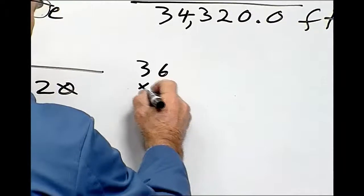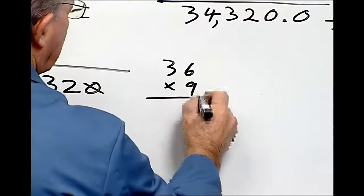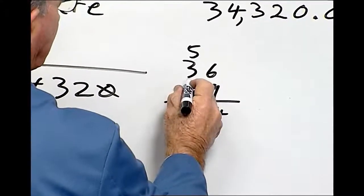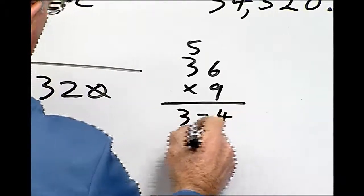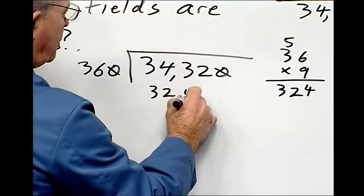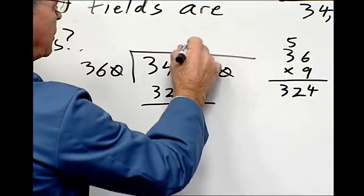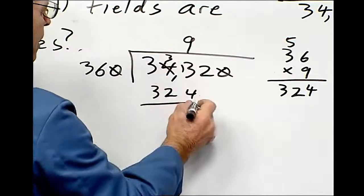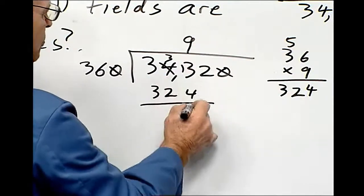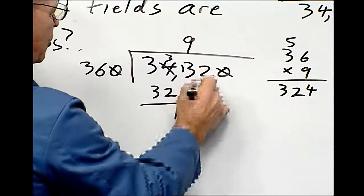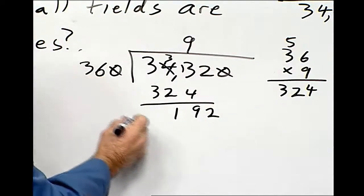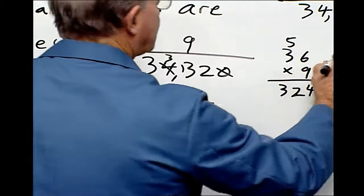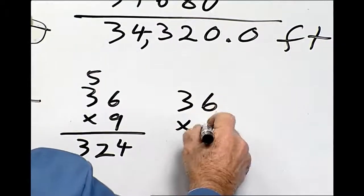There's 36 times 9. 9 times 6 is 54. 9 times 3 is 27, plus 5 is 32. 324. Let's bring over the 9 over here. We can't take 4 from 3, so we have to borrow from the 4. So 4 from 13 is 9. 2 from 3 is 1. Bring down the 2. 192. How many 36's go into 192? It looks like it's 5, so it's 36 times 5.